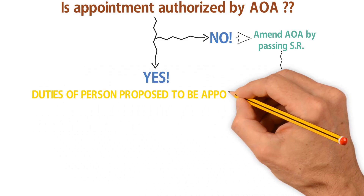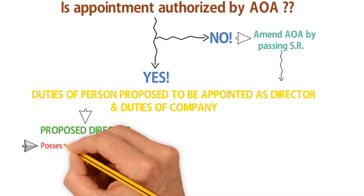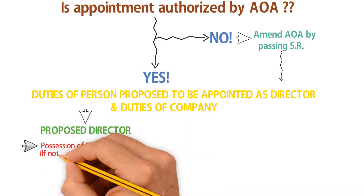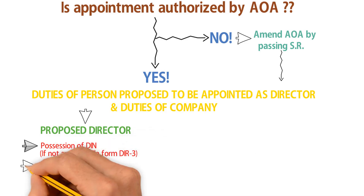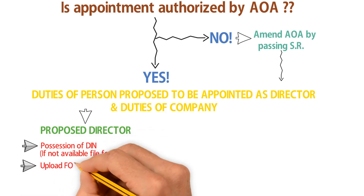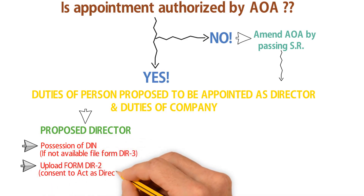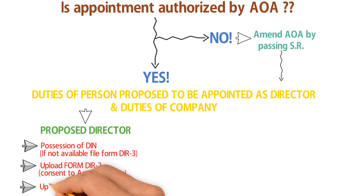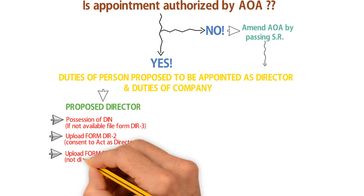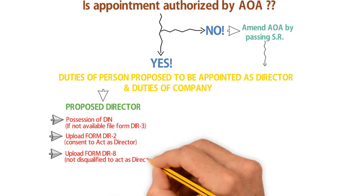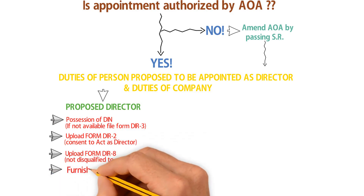Steps by the person proposed to be appointed as director: Step 1 — possession of DIN; if not available, apply for DIN by filing Form DIR-3. Step 2 — upload Form DIR-2, which represents consent to act as director. Step 3 — upload Form DIR-8, which signifies that the proposed director is not disqualified.